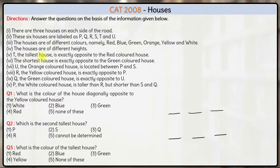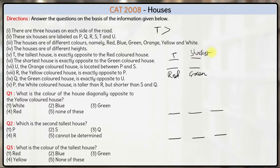T, the tallest house, is exactly opposite to the red coloured house. T is the tallest of all the houses. The shortest house is exactly opposite to the green coloured house. So you'll have a green coloured house and opposite to that you'll have the shortest house.